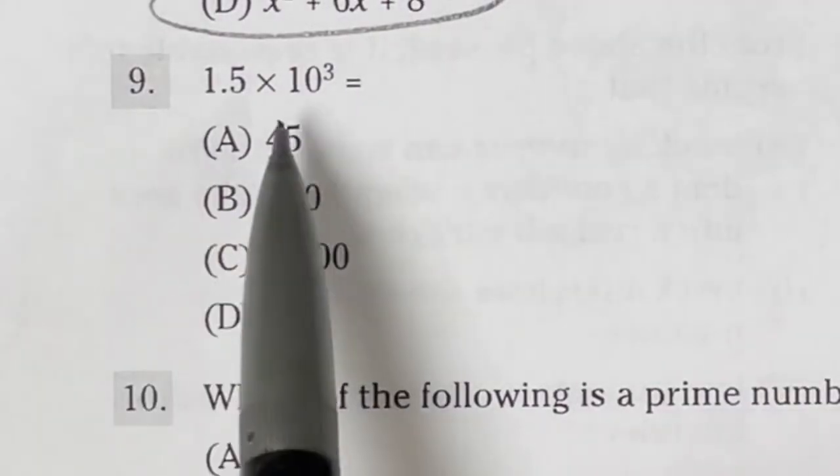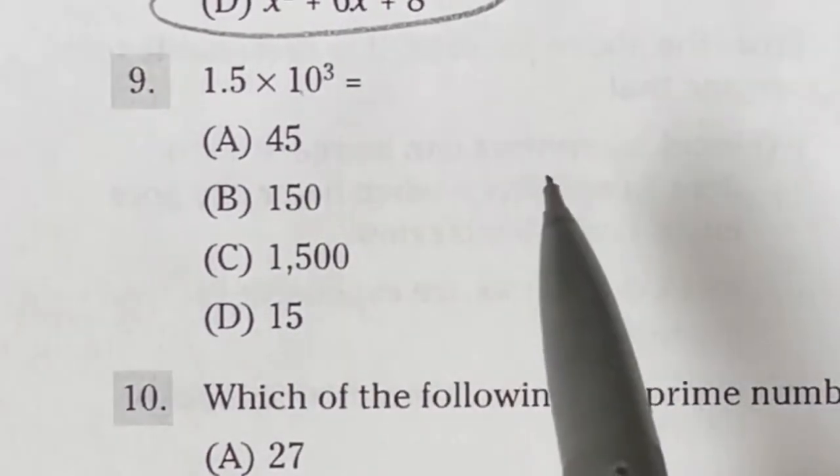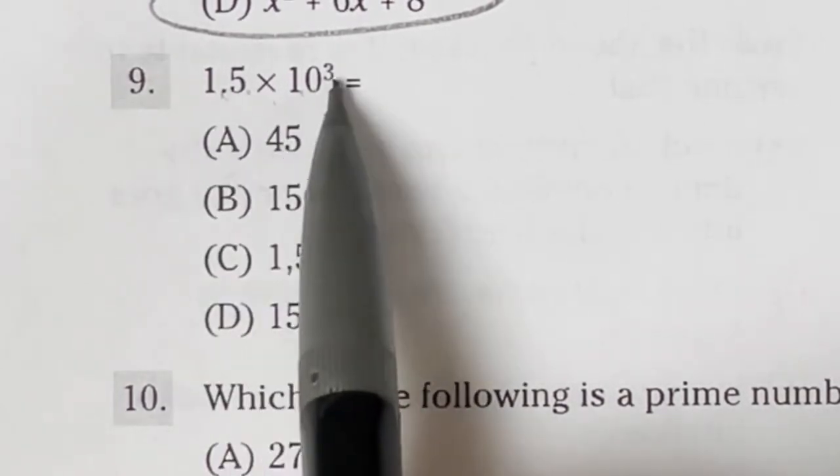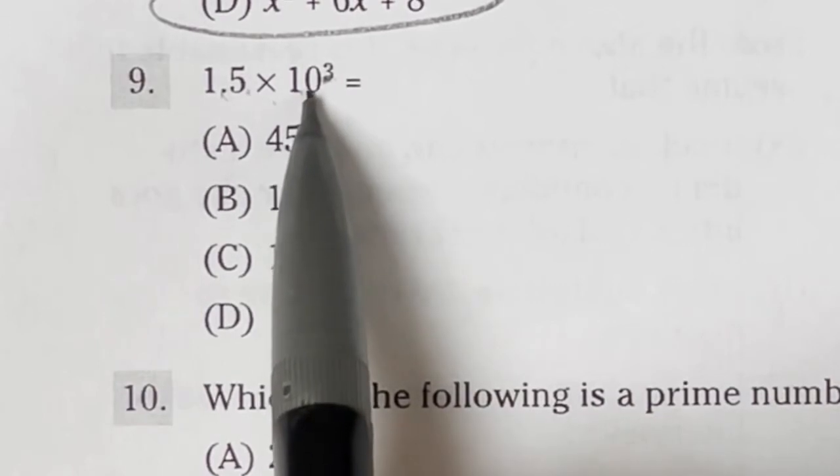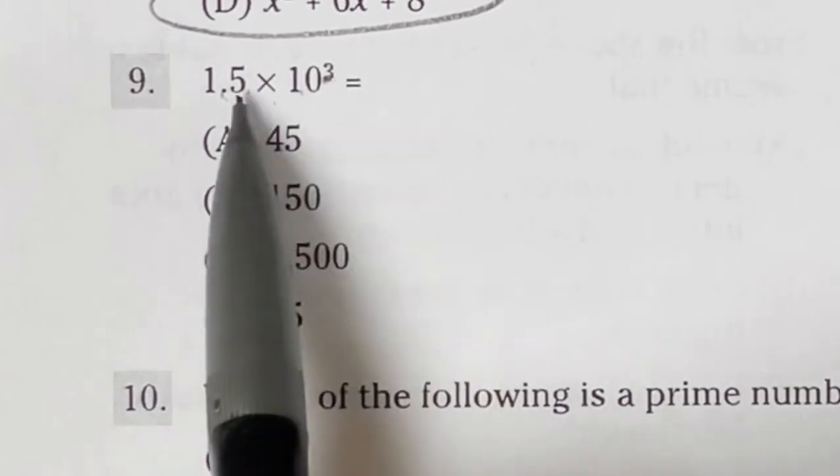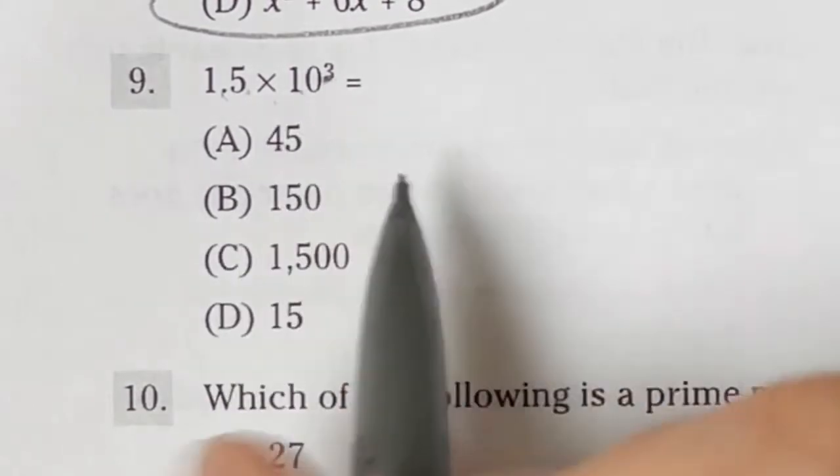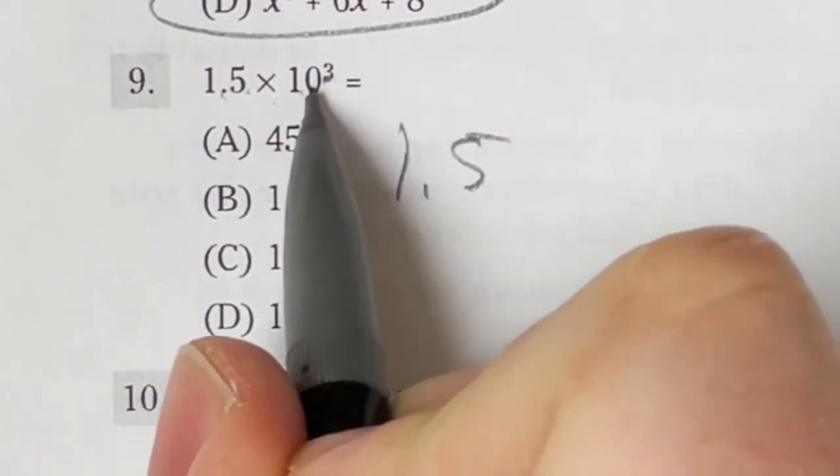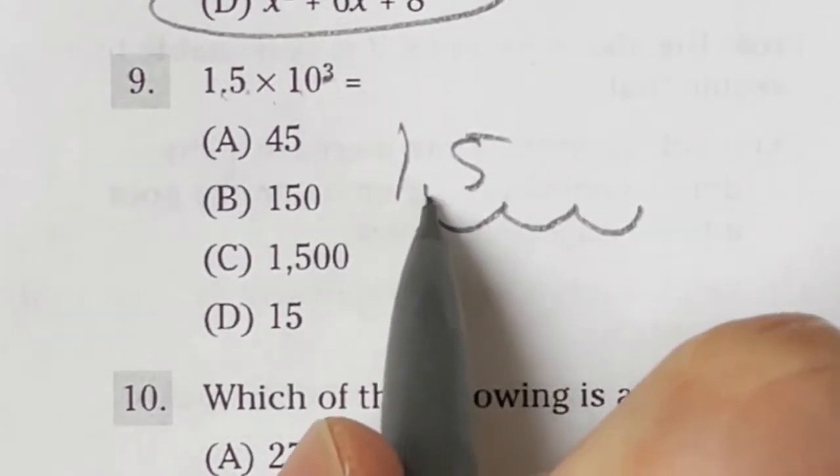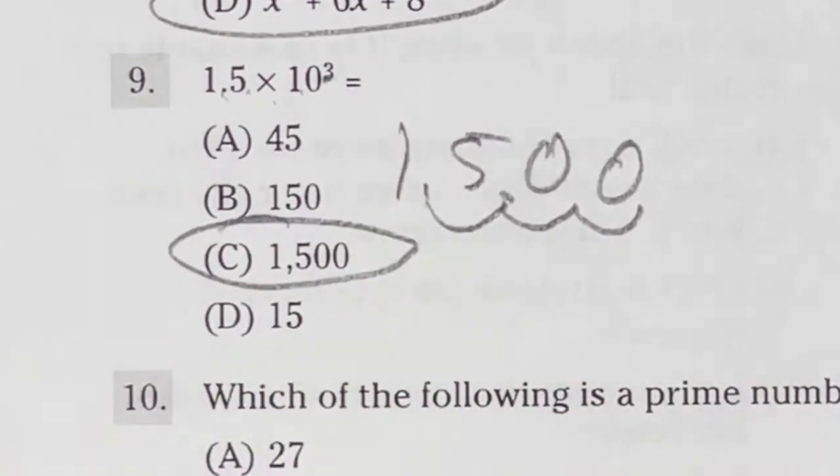Number 9 on the ASVAB is kind of looking at a scientific notation question because it says 10 to the third power and they expect you to know what that means. That essentially just means that whatever this is, you're going to move the decimal place to the right three times because anything times 10 is essentially adding a zero or moving your decimal to the right, however you want to say that. If it's negative, then the exponent, if the exponent's negative, you would move it to the left that many times. So in this case, if I have 1.5 and I'm multiplying it by 10 to the third power, I'm going to move that decimal place over three times. So the first one just puts it on the other side of the 5, but then I got to fill in a zero and a zero here, meaning our final answer for number 9 is C.